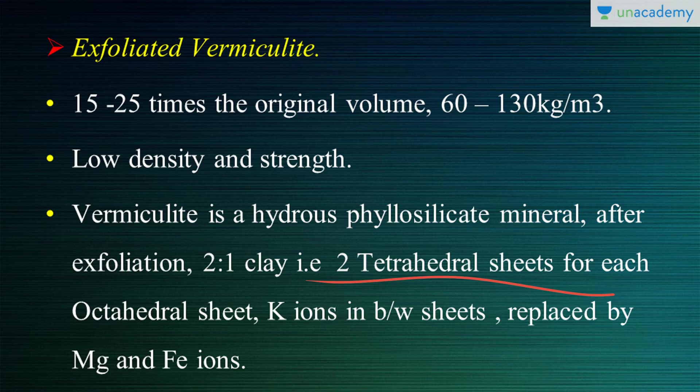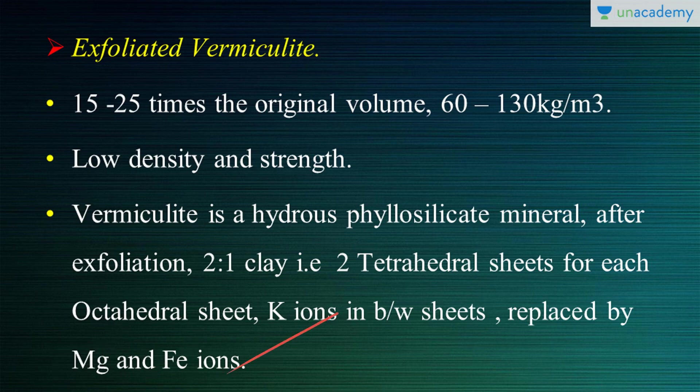For each octahedral sheet there are two tetrahedral sheets. In such sheets, the potassium ions between the sheets are replaced by magnesium and iron ions. This replacement leads to a small expansion and a reduction in density at the molecular level when vermiculite is subjected to exfoliation.